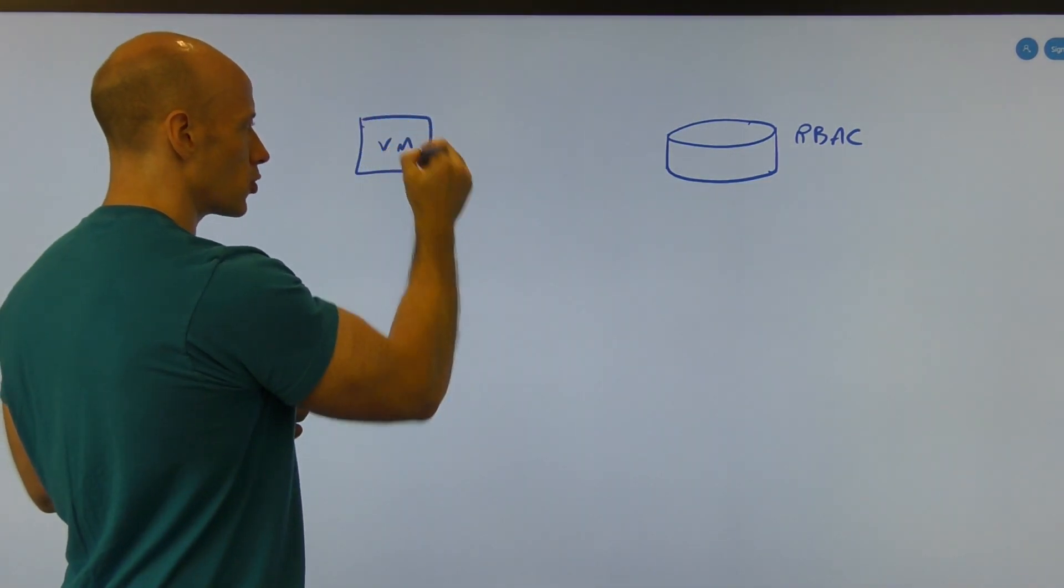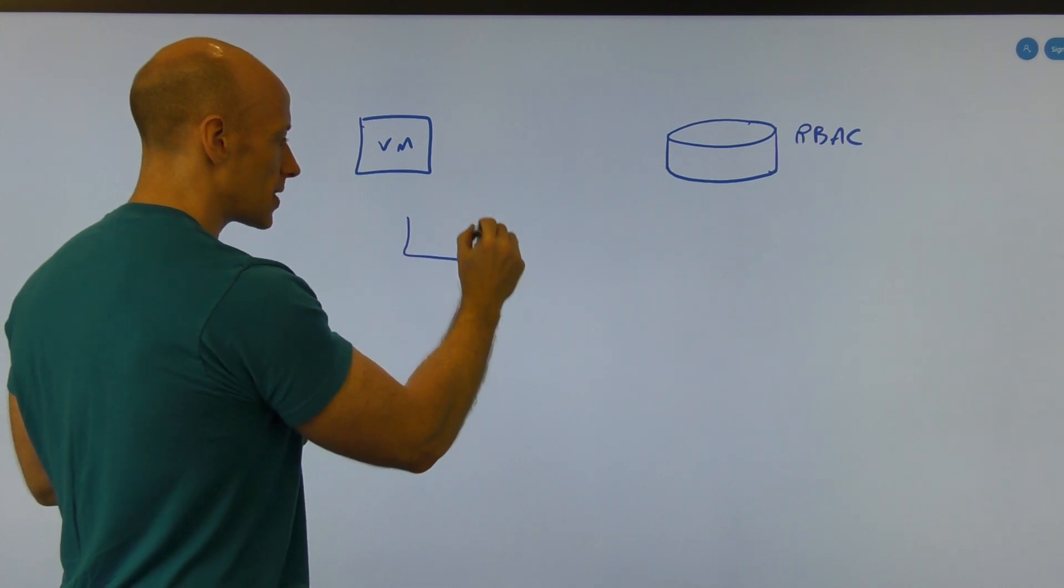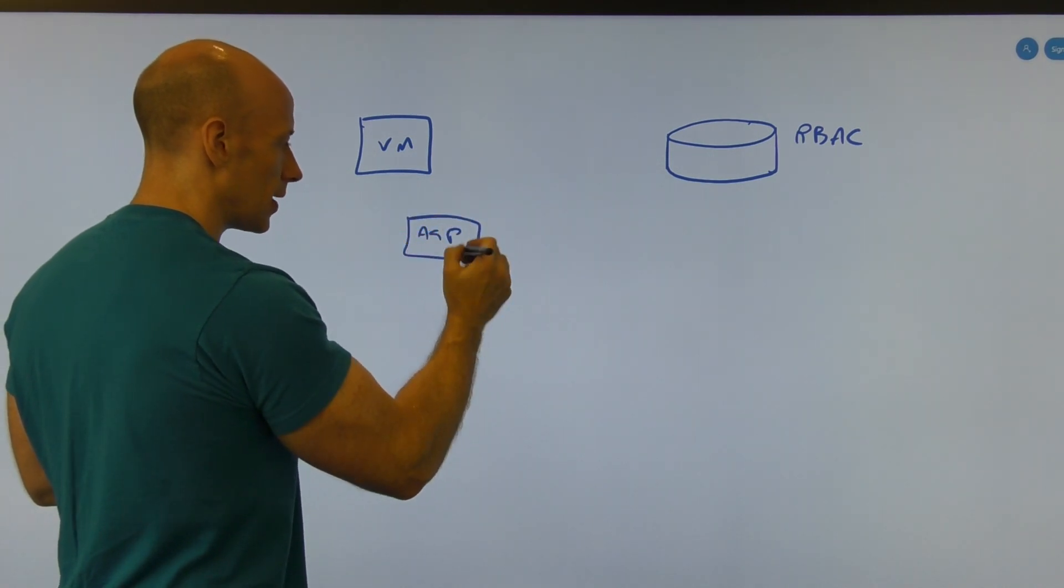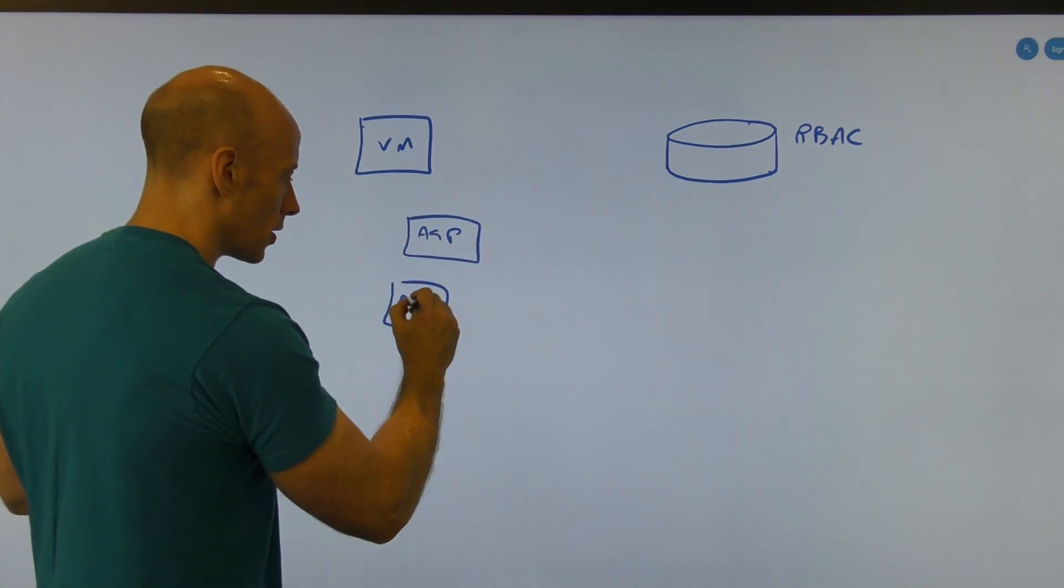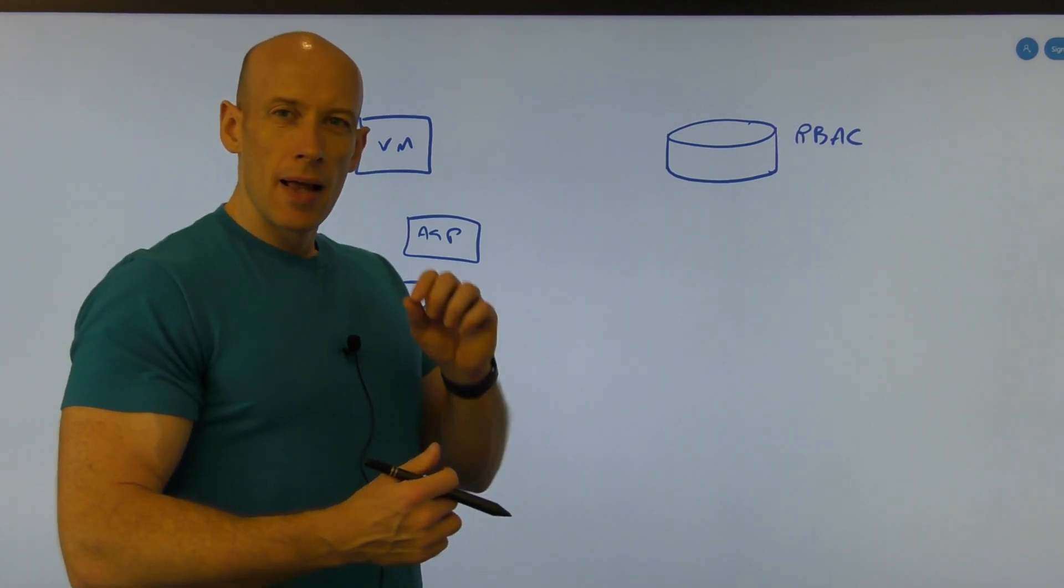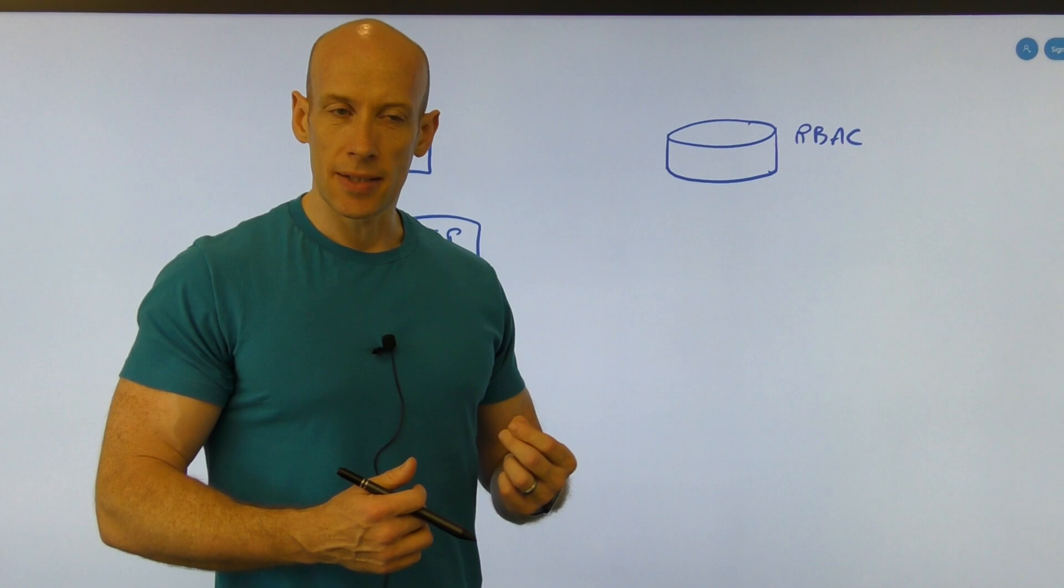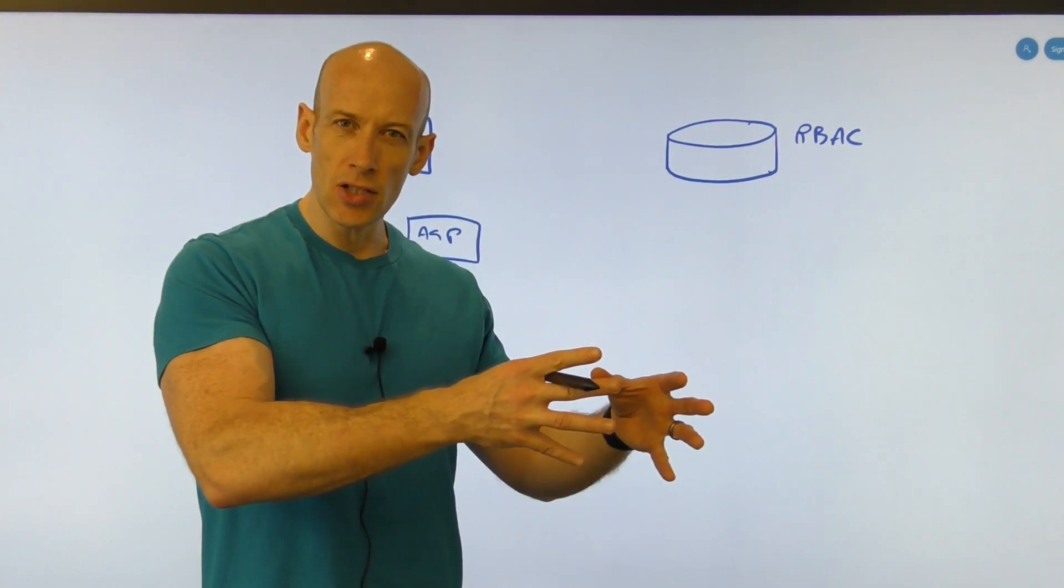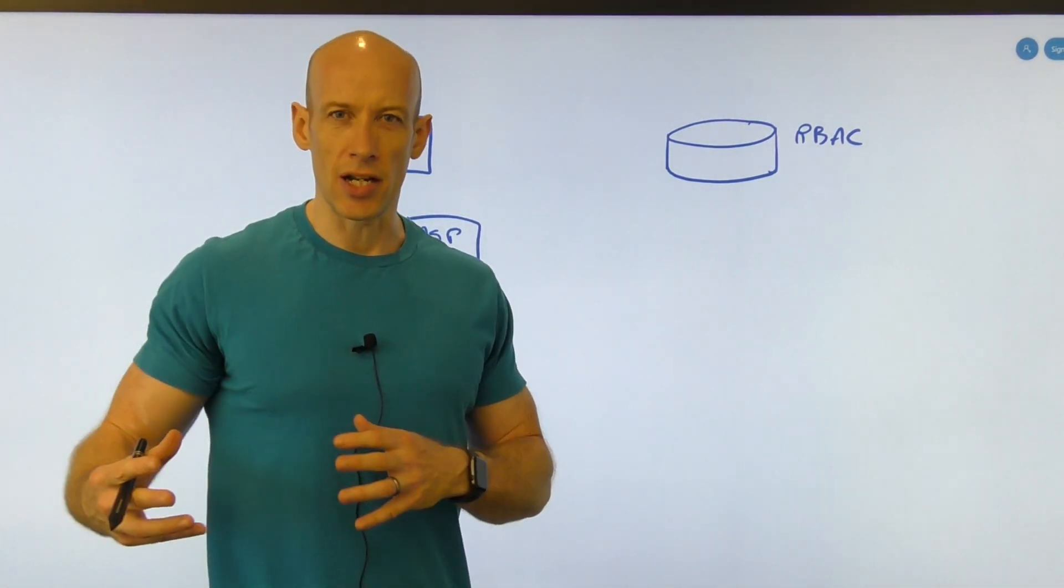This could be, for example, a virtual machine. It could be something in an app service plan. It could be a function. Some kind of serverless compute. There's something called managed identities. And there's system-managed identities and there's user-managed identities. And I'm going to focus on the system-managed identities.